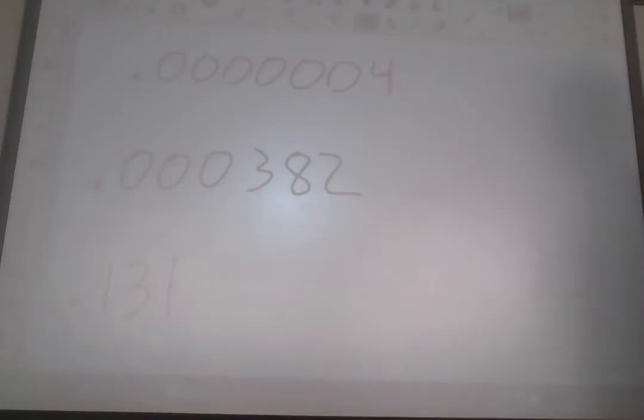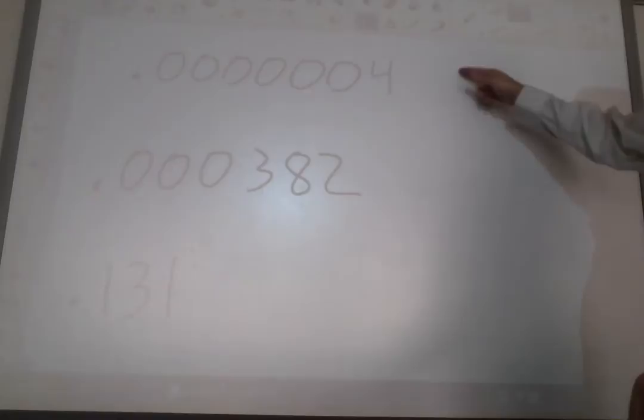Now, remember, this can work with really small numbers, too. For example, here we have 0.0000004. How do we do this with small numbers? Well, it's almost exactly the same. We ignore, and this time it's the beginning zeros that we're ignoring. We ignore all these beginning zeros. We put the number 4. Just the number 4. Times 10.